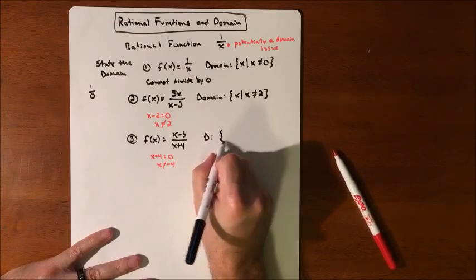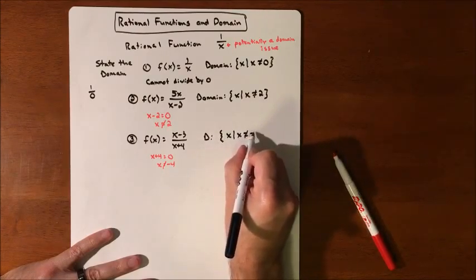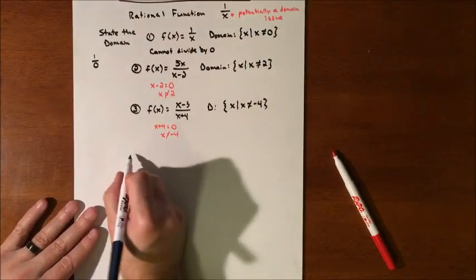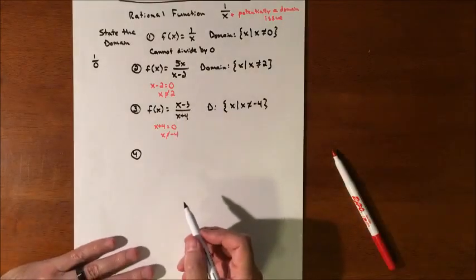That's the number we've got to kick out. So our domain are all of the X's such that X is not going to equal negative four. We'll do one more. And again, the numerator has nothing to do with the domain.